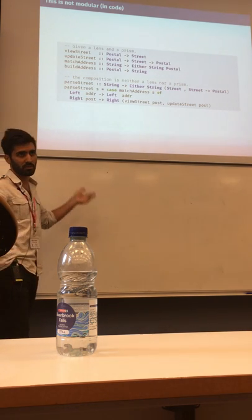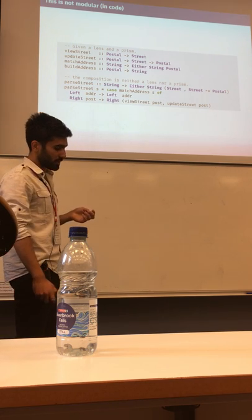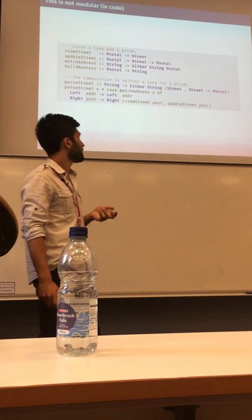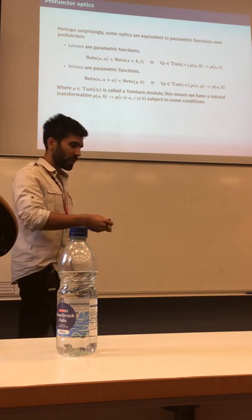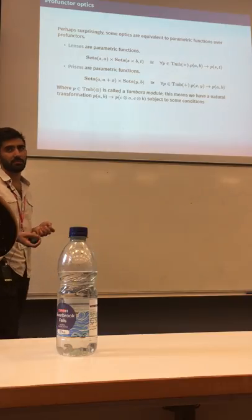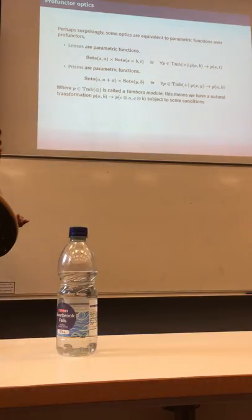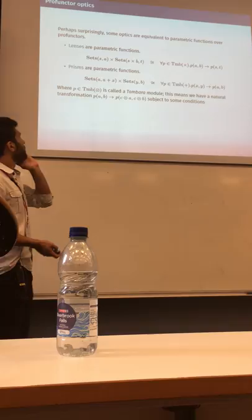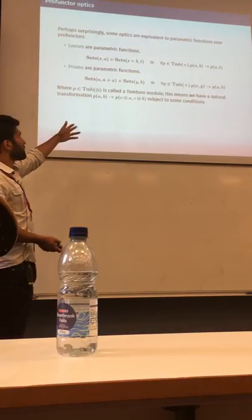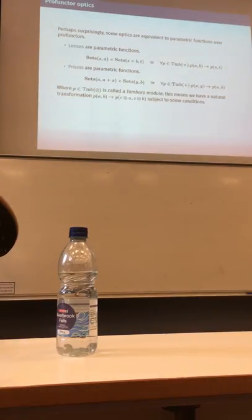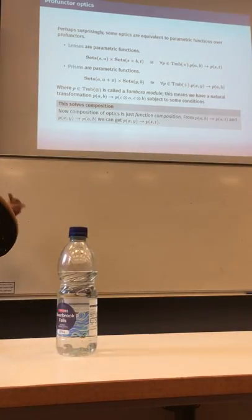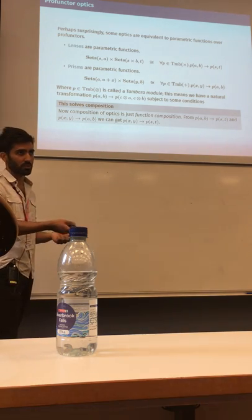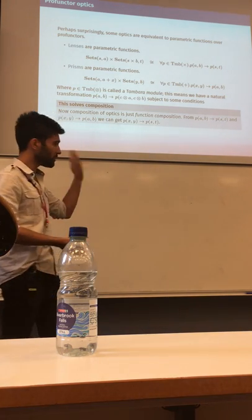And that translates into code. Again, the code is not difficult, but this code we would prefer not to have to write. The solution given in optics libraries — these data accessor libraries — is to use something called profunctor optics. The idea is that, surprisingly, a lens or a prism can be written equivalently as a function that is parametric over profunctors with certain algebraic structure. The algebraic structure is a Tambara module. A lens can be written as a function, a prism can be written as a polymorphic function, and this solves the problem of composition, because now composition of these things is just function composition.